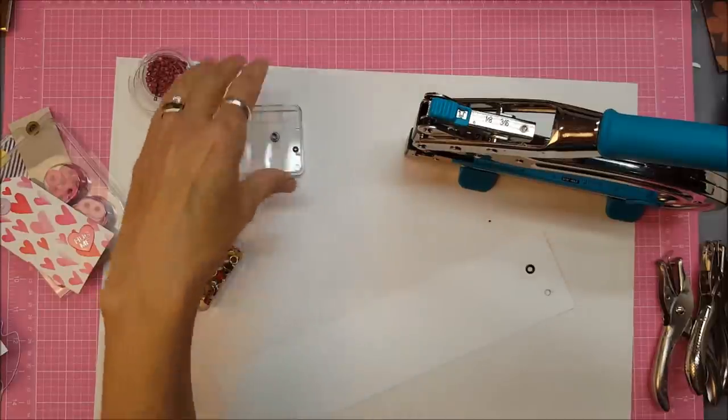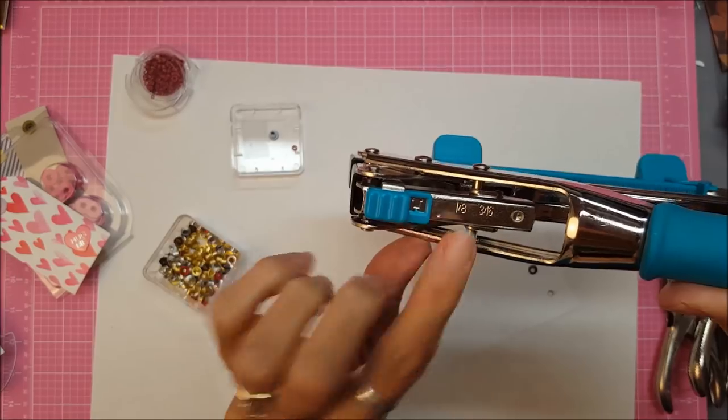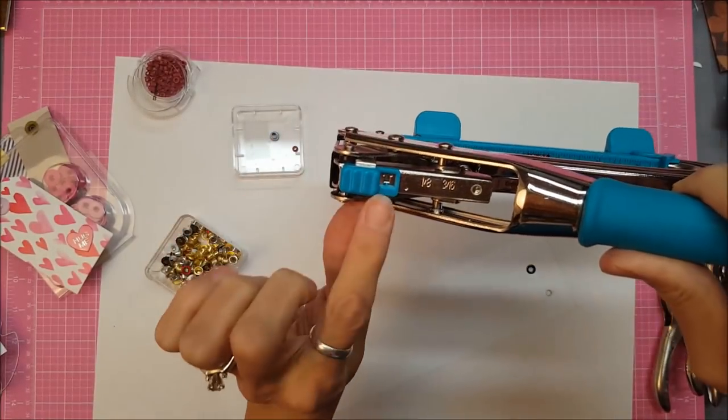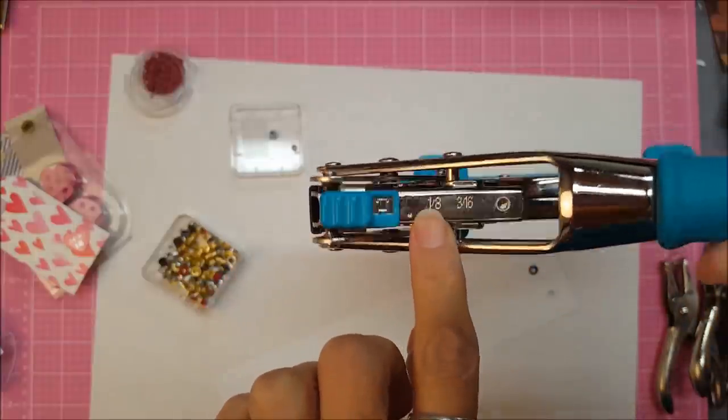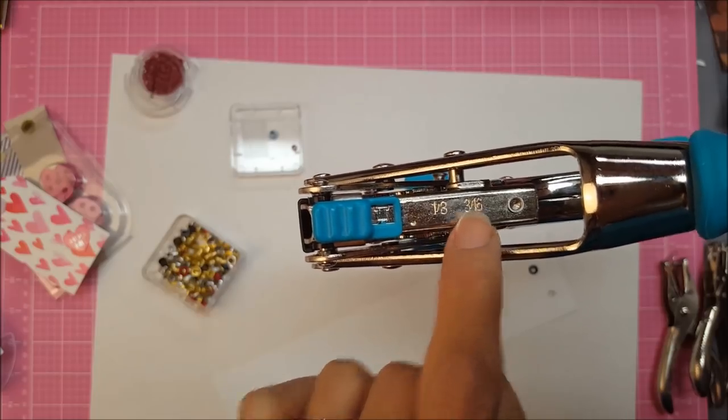So I wanted to show you how this works. On the top you'll notice there's this blue gauge. It's easier to move when you have it down on the table. It has eyelet setting, the 1/8 inch hole punch, and the 3/16 inch hole punch.